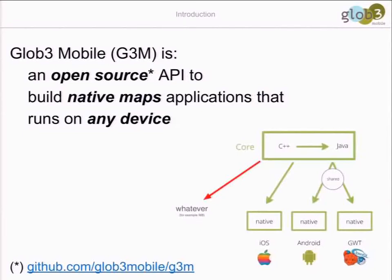We Love Free Mobile is a framework to build native map applications for mobile. It's open source with a very permissive library license. Here is the source repository - we actually work on this repository, we develop on it. This is the brief: it's open source, native, for any device. Today we support three platforms - iOS, Android, and HTML5 using GWT, which is Google Web Toolkit, a compiler that translates Java to JavaScript so you can run Java code on browsers.